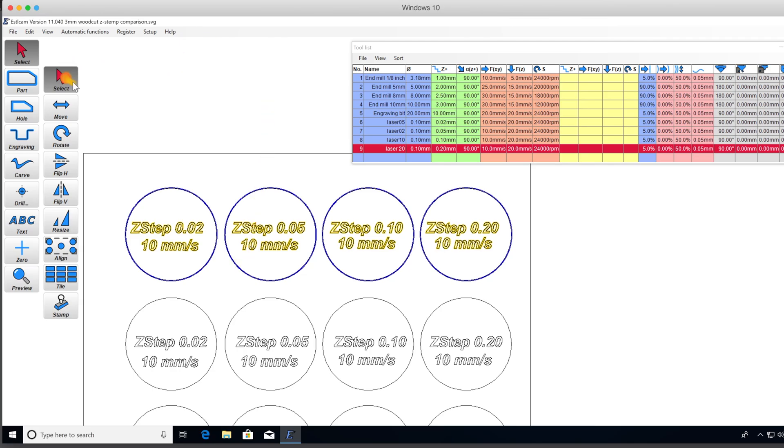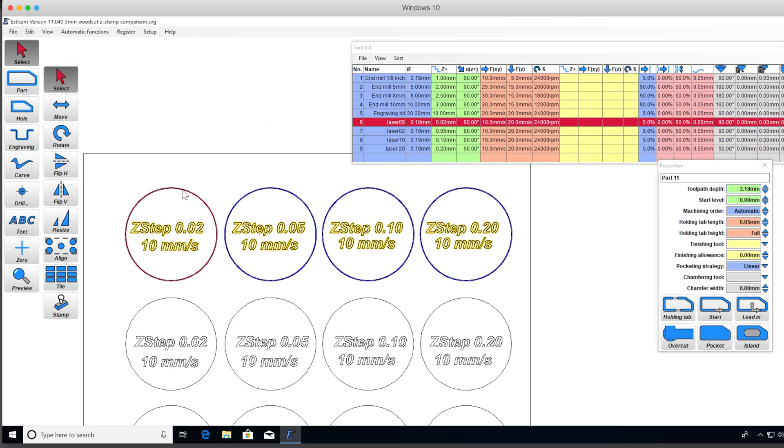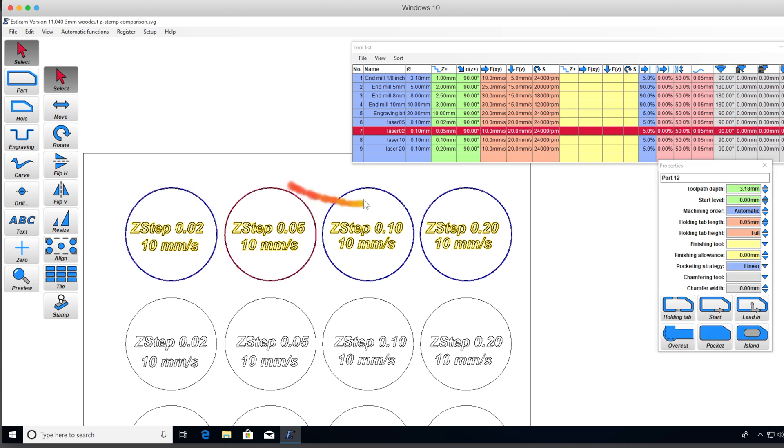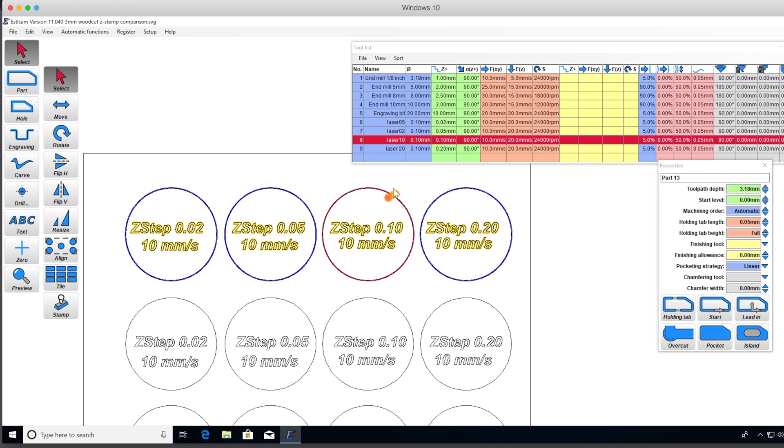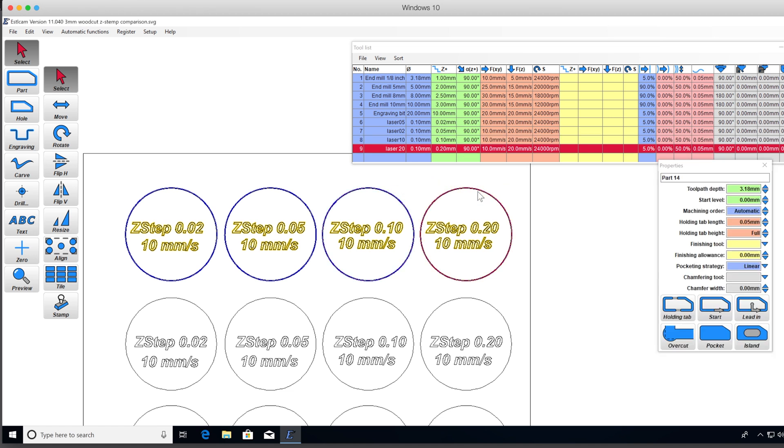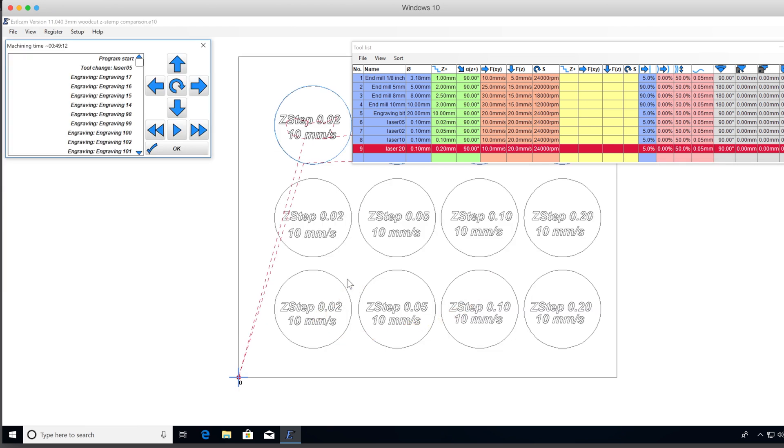Let's make sure that this one is set to the 0.02 depth, this one is set to 0.05, this one's set to 0.1, and 0.2. So let's go ahead and generate this job.